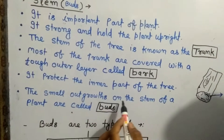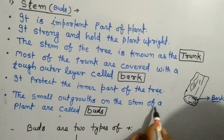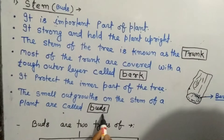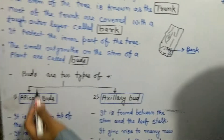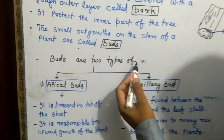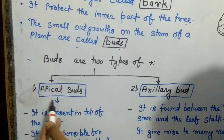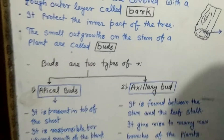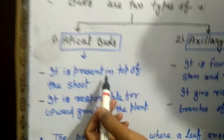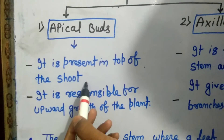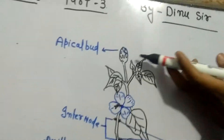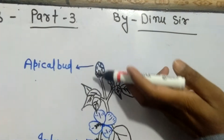The small outgrowths on the stem of a plant are called buds. Buds are of two types: first, apical buds, and second, axillary buds. Apical buds are present at the top of the stem. Here, see in the figure — this is the tip part of the plant.